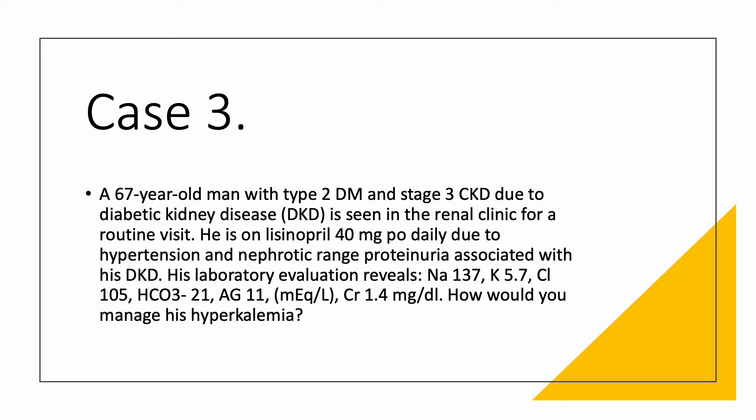Case number three. A 67-year-old man with type 2 diabetes mellitus and Stage 3 chronic kidney disease due to diabetic kidney disease is seen in the renal clinic for a routine visit. The patient is on lisinopril 40 mg a day at full dose for hypertension and nephrotic range proteinuria associated with his diabetic kidney disease. You do labs and you have a sodium of 137.